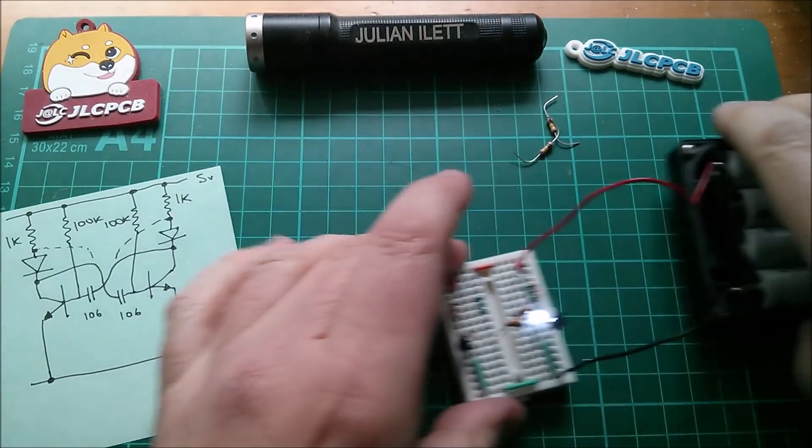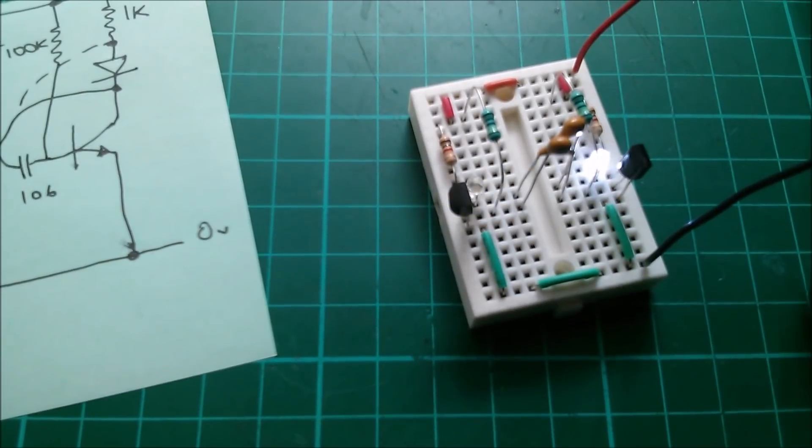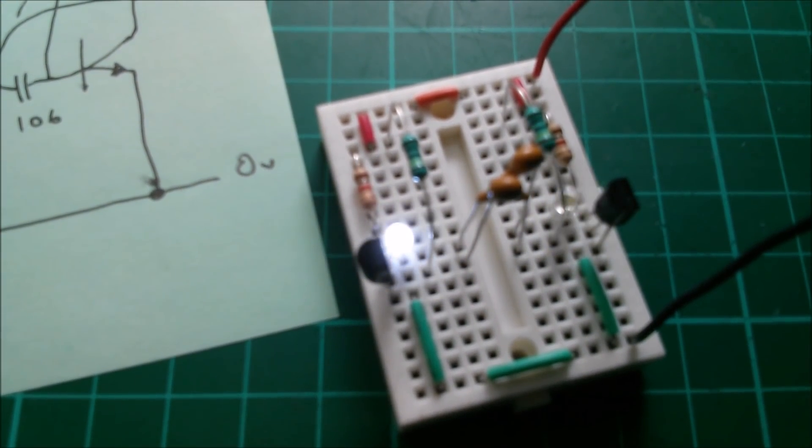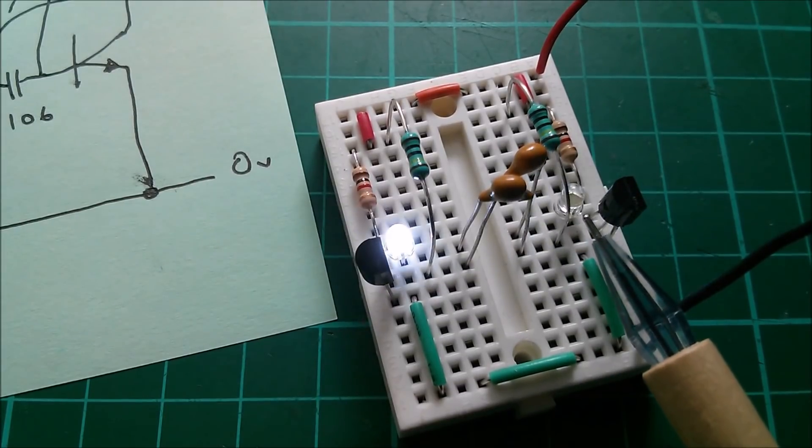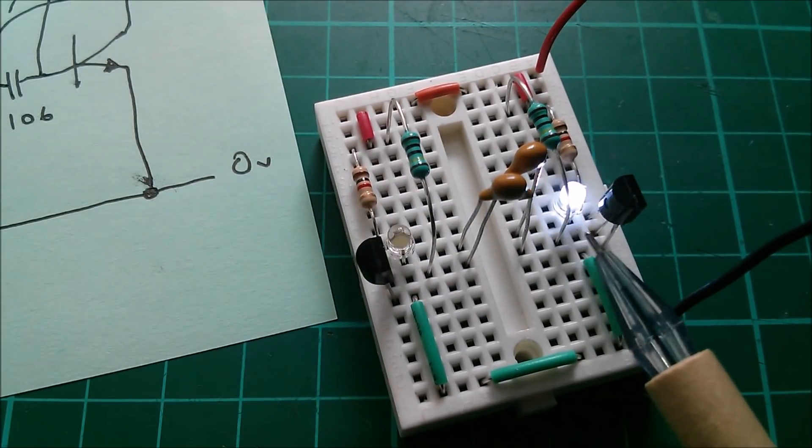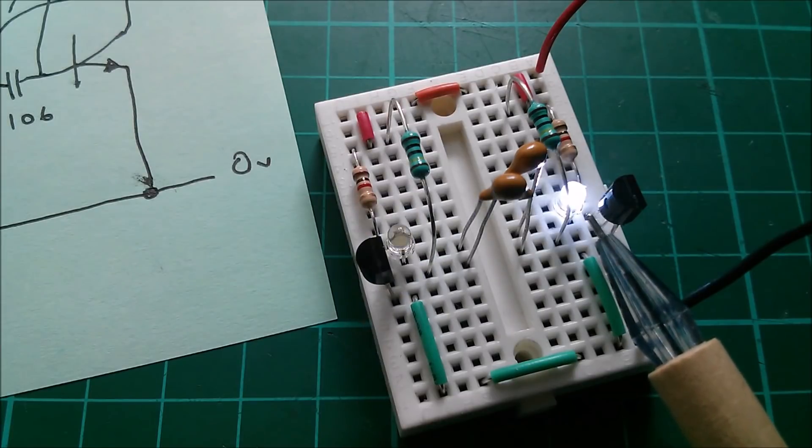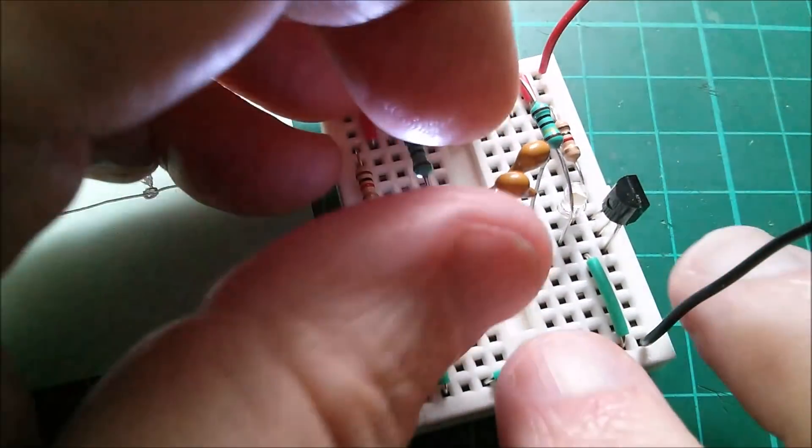And now something quite interesting has happened. I'm not sure if you're going to be able to see this, but let's get in really close. What's happening is that the LED comes on bright to start with. Yes, I think you can see it in the area of light on the breadboard. Comes on bright to start with, but then it goes dimmer.